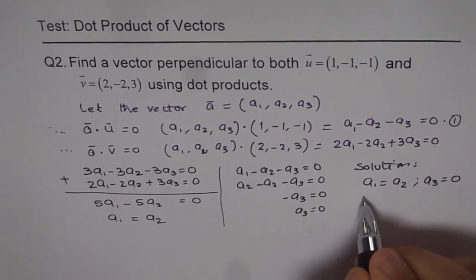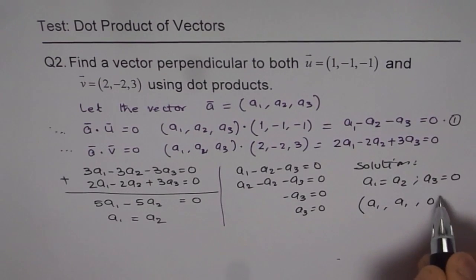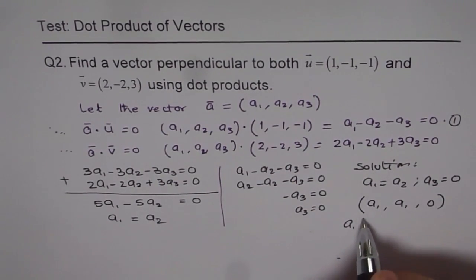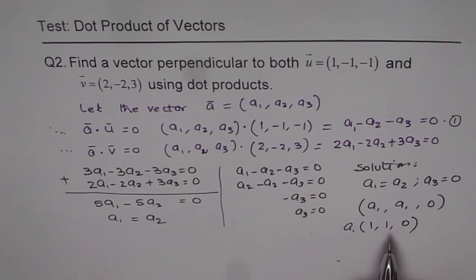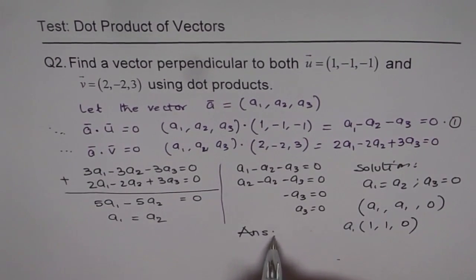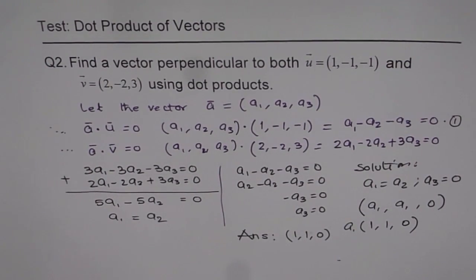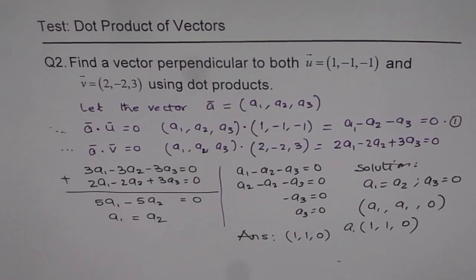That means the vector should be of the form (a1, a1, 0). We can take a1 as a common factor and write the vector as (1, 1, 0). So the vector (1, 1, 0) is perpendicular to both u and v. You can test this by computing the dot product of (1, 1, 0) with u and with v, and checking that both results are zero.